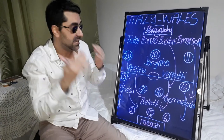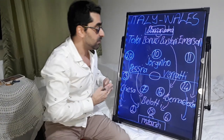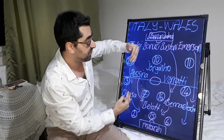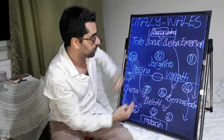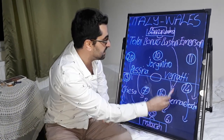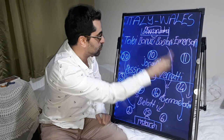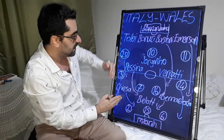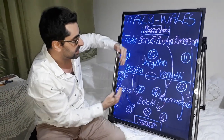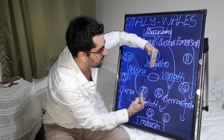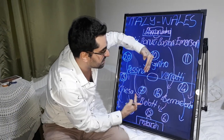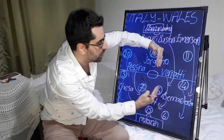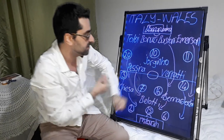Sometimes Italy became clustered on the left zone of the pitch. Bernardeschi, Verratti, Emerson, Bastoni, Jorginho, and Bellotti all came close to the left-hand side together, creating an overload on that side.